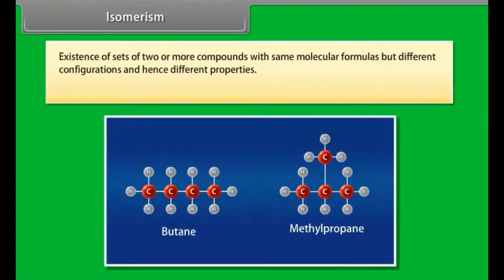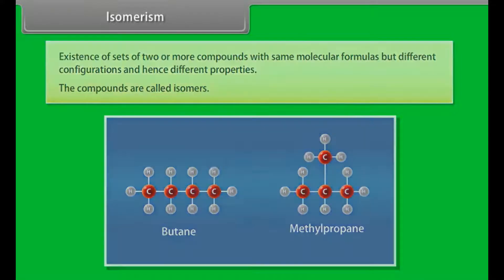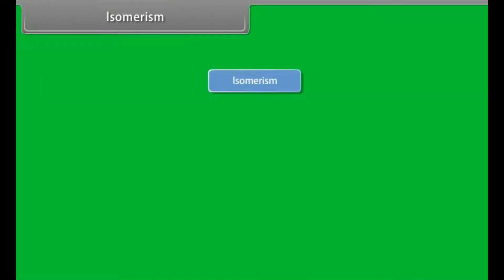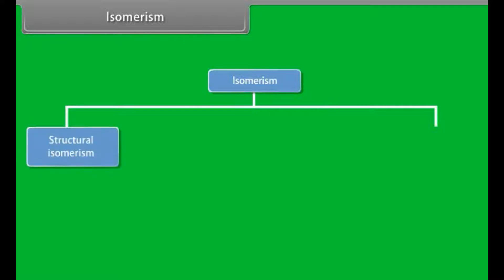Isomerism is the existence of sets of two or more compounds with same molecular formulas but different configurations and hence different properties. The compounds are called isomers.